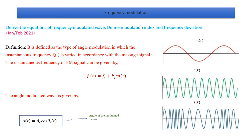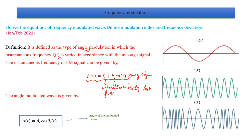Frequency modulation is defined as the type of angle modulation in which the instantaneous frequency fᵢ(t) is varied in accordance with the message signal. The instantaneous frequency of the FM signal is given as fᵢ(t) = fc + kf·m(t), where kf is the sensitivity factor, fc is the carrier frequency, and m(t) is the message signal. The angle modulated wave is given by s(t) = Ac·cos(θᵢ(t)), where θᵢ(t) is the angle of the modulated carrier and Ac is the carrier signal amplitude.